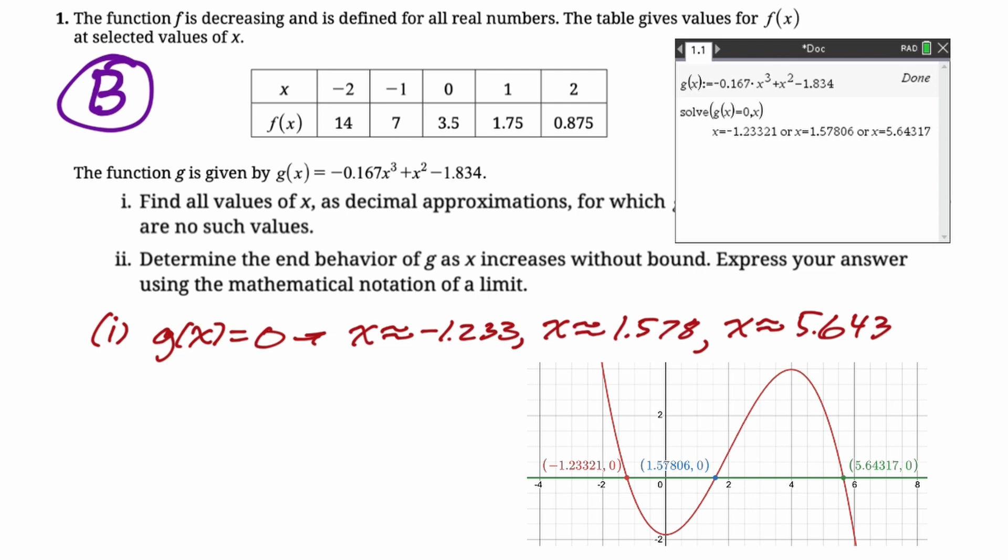Then we need to determine the end behavior of g as x increases without bound. We want to express our answer using the mathematical notation of a limit. So you can see from the Desmos graph that as x increases without bound, the graph of g(x) tends toward negative infinity or decreases without bound. So I'm going to just basically write that. I also used my calculator and typed in limit. So the limit as x approaches infinity of g(x) was negative infinity.